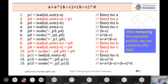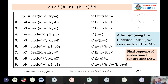We are removing some lines, minimizing the result, and getting the pure, minimized or optimized DAG. Nine steps are there to create a DAG for a given expression like this.